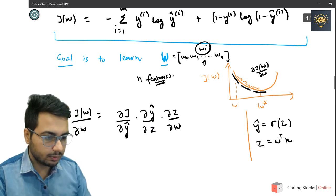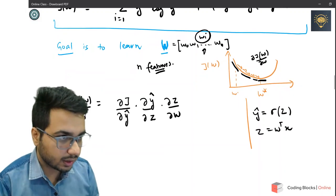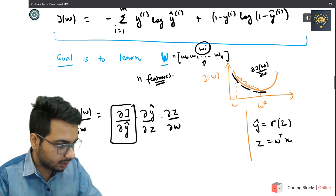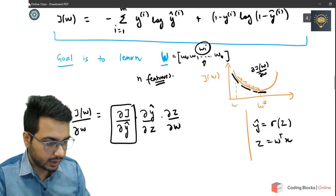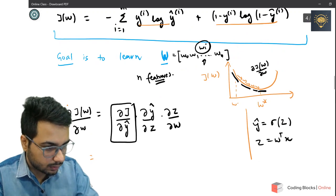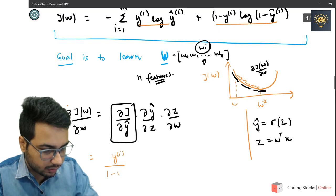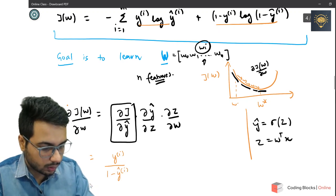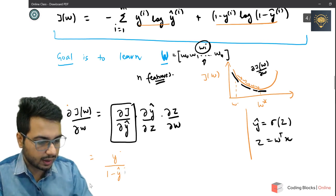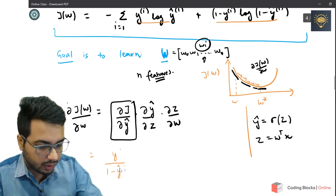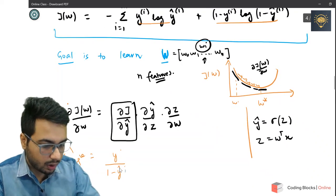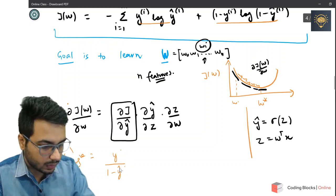Let us first compute the term ∂J/∂y_hat. If you differentiate the loss with respect to y_hat, for one example you get: -y / y_hat + (1 - y) / (1 - y_hat). Let us work with one example to simplify things, and later we can add back the summation notation.